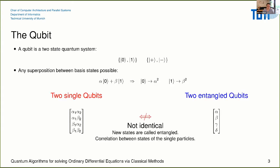Let me introduce some concepts of quantum computing, starting with the qubit. The qubit is a two-state quantum system — the two measurable states are typically zero and one, like a bit. But you can also be in a superposition: alpha times zero plus beta times one, where alpha squared plus beta squared equals one, since it's like a quasi-probability distribution. If you perform a measurement, you measure the zero state with probability alpha squared and the one state with probability beta squared.